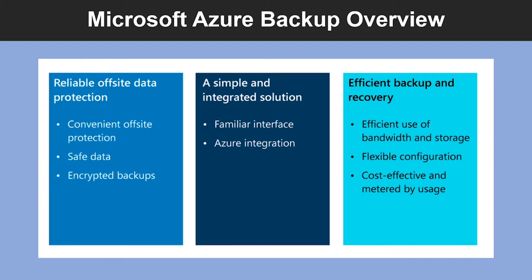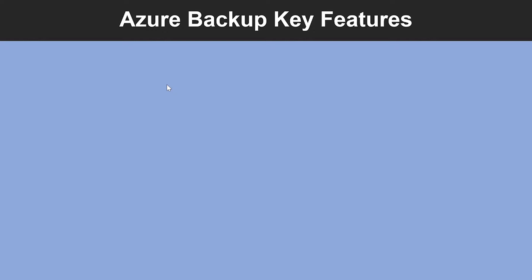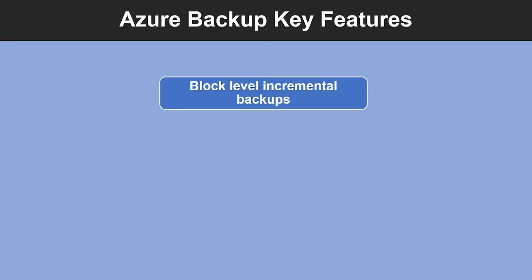The difference is that with Azure backup, the data is compressed and encrypted and the final destination is in the cloud. Now let's look into the Azure backup key features. The first one is block-level incremental backups. The backup agent performs incremental backups by tracking file and block-level changes and only transferring the changed blocks, hence reducing storage and bandwidth utilization. Different point-in-time versions of the backup use storage efficiently by only storing the changed blocks between versions.